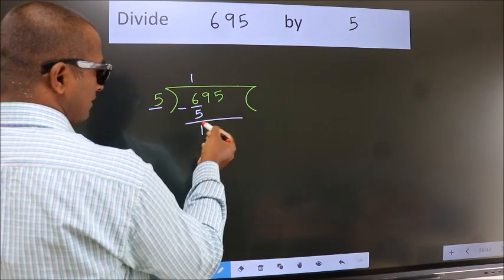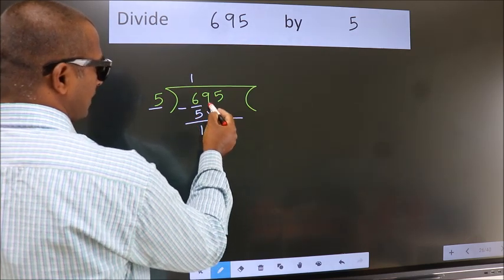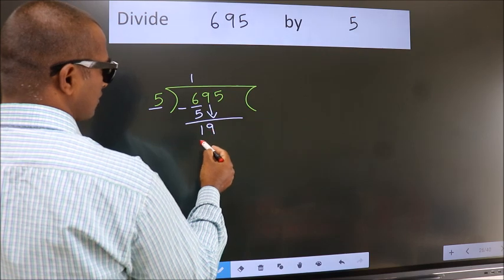After this, bring down the beside number. So, 9 down. So, 19.